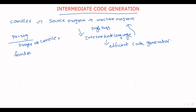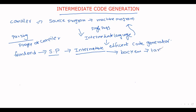The purpose of the front end is to translate the source program into an intermediate program. The front end includes lexical analysis, syntax analysis, and semantic analysis. Taking this intermediate representation, the back end generates the target code. So between the front end and back end, the middle part — the intermediate code — sits in between.